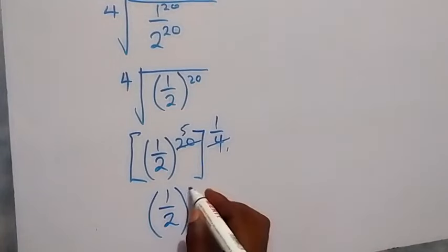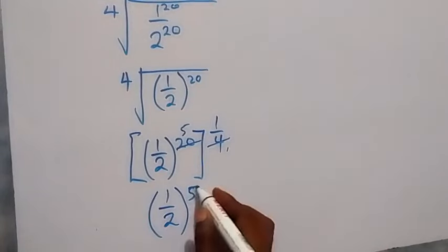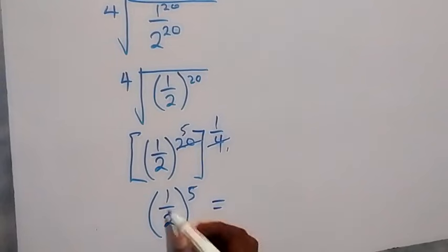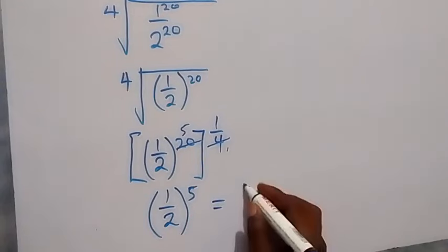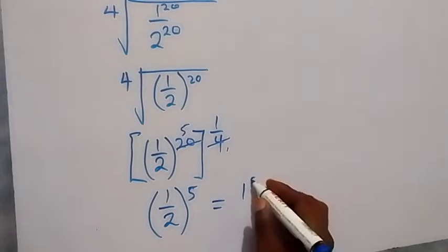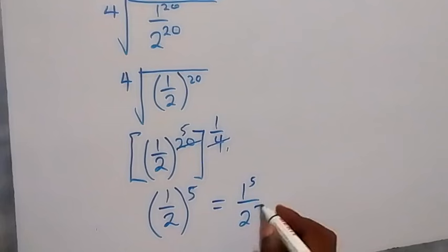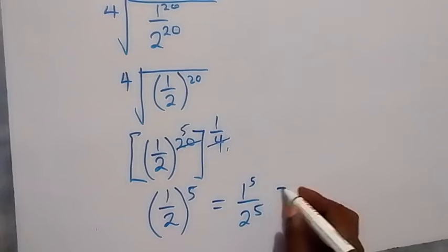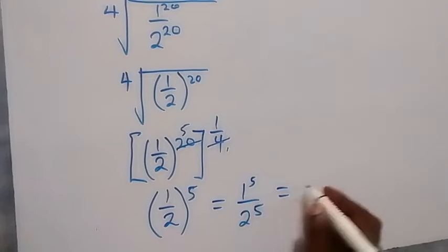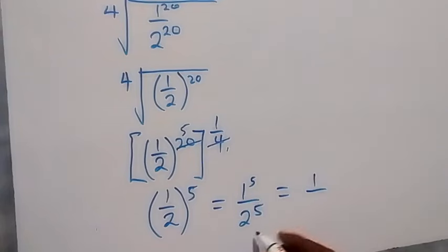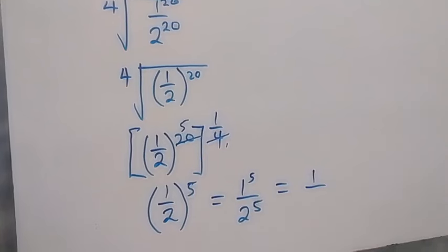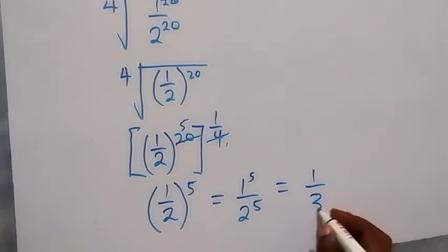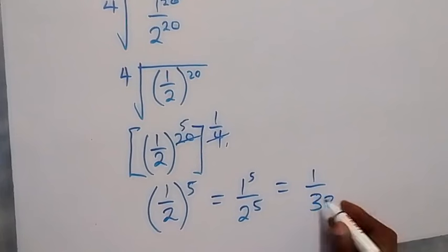So we have 1 over 2 raised to power 5. 1 raised to power 5 is still 1. Then 2 raised to power 5 means 2 multiplied by itself 5 times, and that gives us 32.